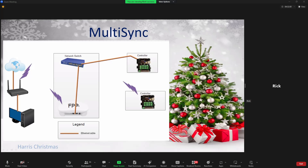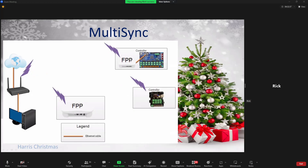When you have an FPP device with two interfaces — Wi-Fi and Ethernet — that's where you create a separate network. In this case you have a home network design with a small separate show network for a wired controller. Alternatively, you can make a non-multi-sync-capable controller Wi-Fi capable by adding an FPP device, eliminating switches and wires. The FPP device becomes the small separate show network for that controller while everything else remains on the home network.